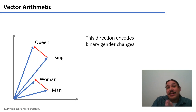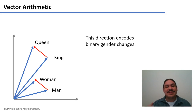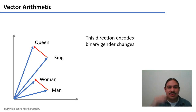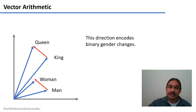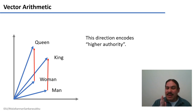Indeed, vectors are going to have information about all of these changes. For example, binary gender — man and woman — is going to be indicated by some vector, and that same vector indicates the change between king and queen. So that vector will encode that change or that binary. There's going to be a different vector which encodes something like higher authority, going from man to king or from woman to queen.